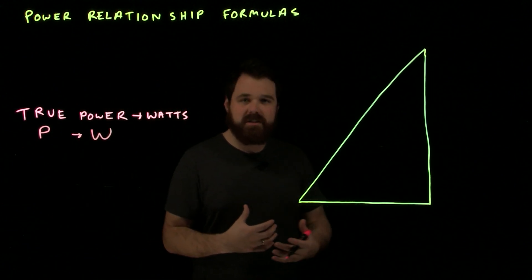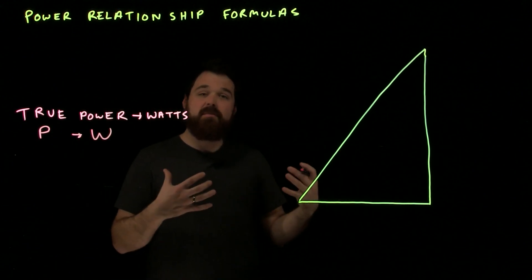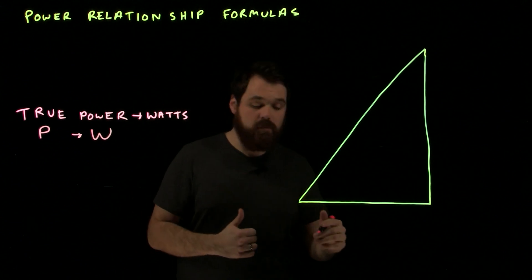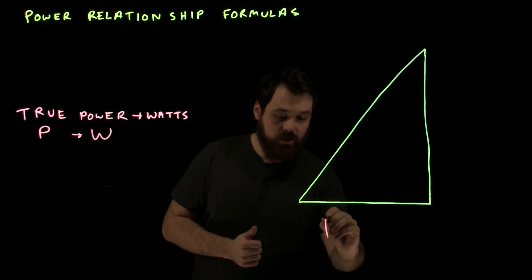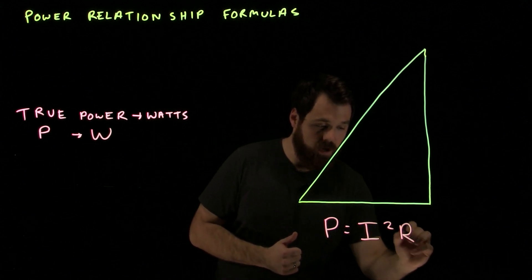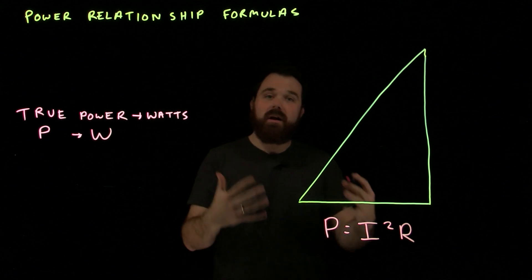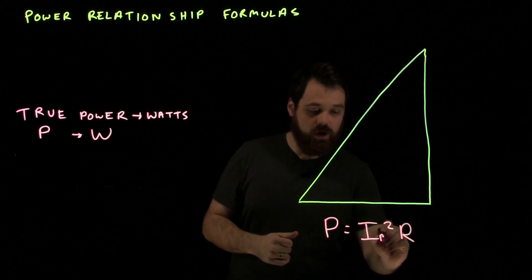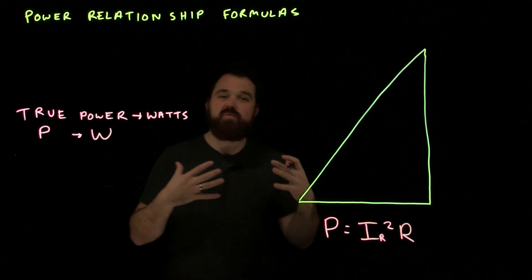We have three formulas that will work for true power. We have the main one, which you're going to use the most often, which is P equals I squared R. Let's ensure we're talking about the current flowing across the resistor times the actual resistance.